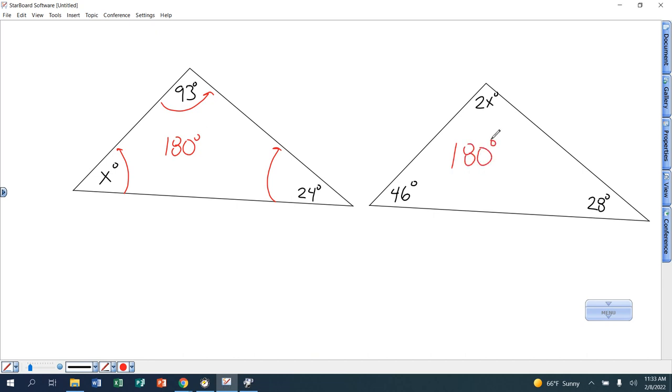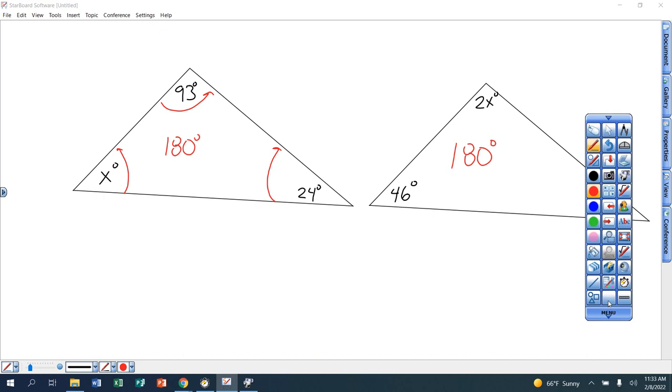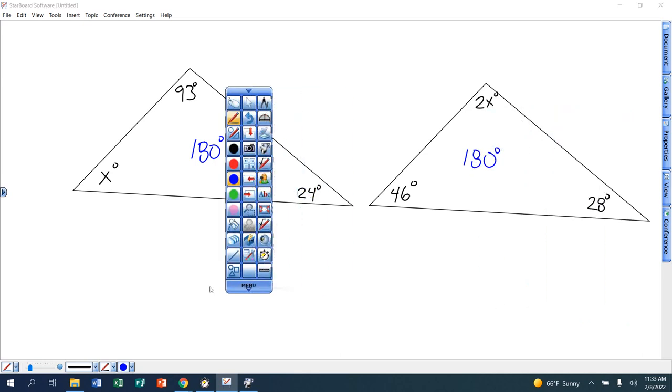So for this problem, what they're doing is they're giving you the parts, and they're asking you, knowing that the triangle has 180 degrees in it and giving you those parts, find what you're missing using algebra.